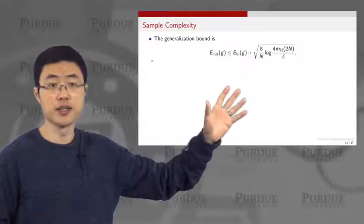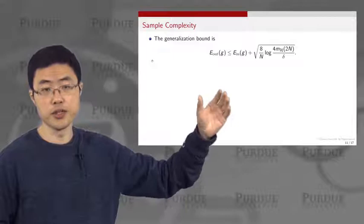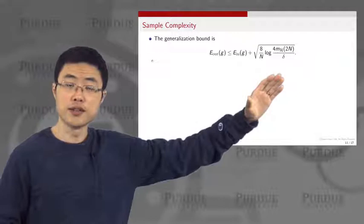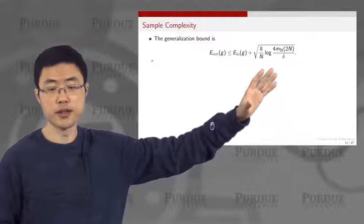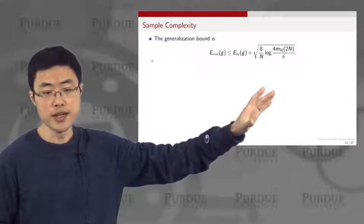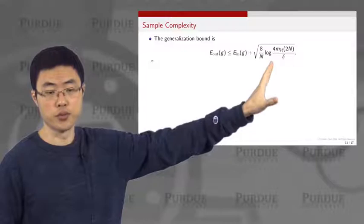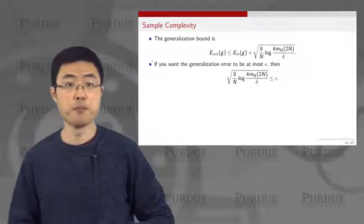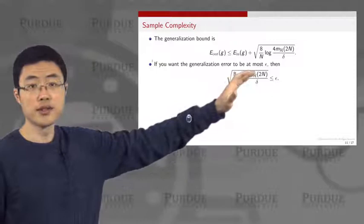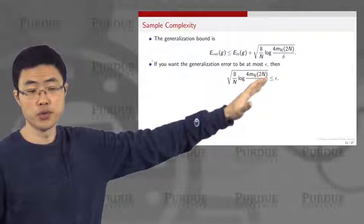We also have the delta, the confidence you want to achieve. If you make delta extremely small — meaning you want to be more and more confident — then you need a much bigger n to achieve the same accuracy, where accuracy is defined as the square root of those terms. So if you want the generalization error to be at most epsilon, you want the square root term to be less than or equal to epsilon.